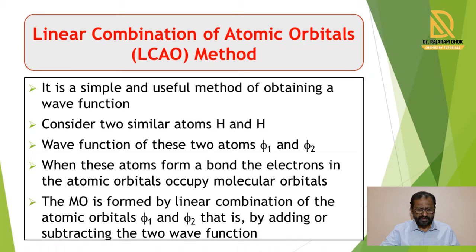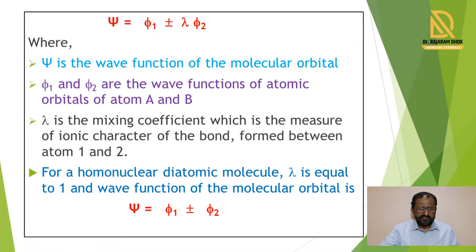When these two atoms form a bond, the electrons in the atomic orbitals occupy the molecular orbitals. The molecular orbital is formed by linear combination of the atomic orbitals phi1 and phi2 — that means by adding or subtracting the two wave functions. We write the equation: psi equals phi1 plus or minus lambda times phi2. In this equation, psi is the wave function of the molecular orbital, and phi1 and phi2 are the wave functions of the atomic orbitals of atom A and atom B respectively.